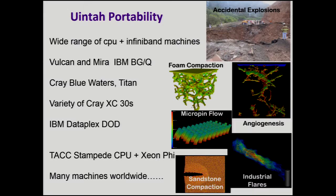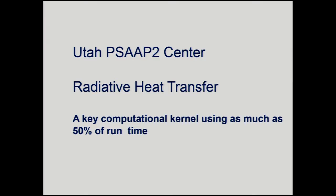To summarize portability: we have lots of different applications, with users all over the world running this code on many different machines. It runs on everything from laptops up to machines like Mira and Titan. We've run on Blue Waters, Vulcan, a variety of Crays, DOD machines, and the Stampede machine. It was easy to port to the Xeon Phi. Getting performance, however, has been an absolute disaster on that machine.